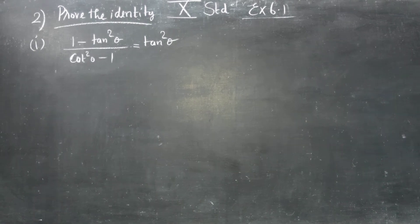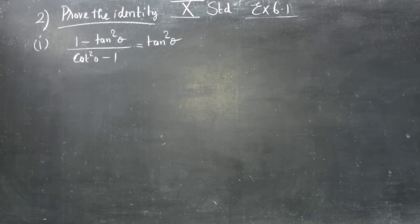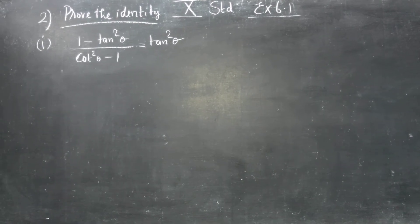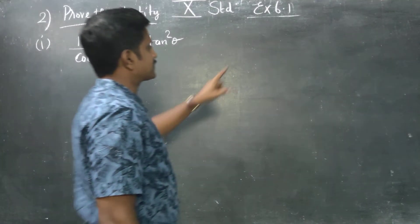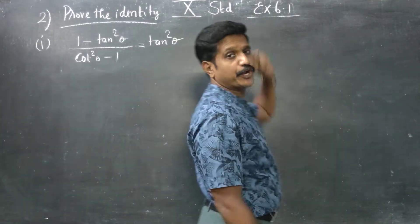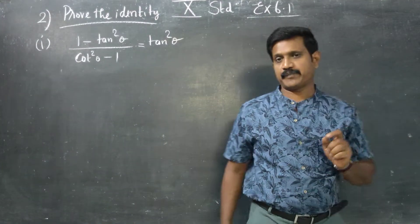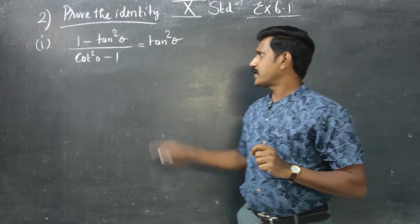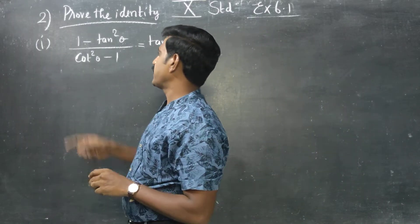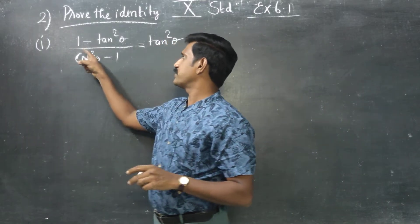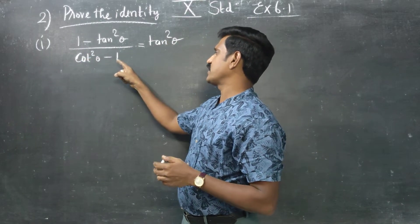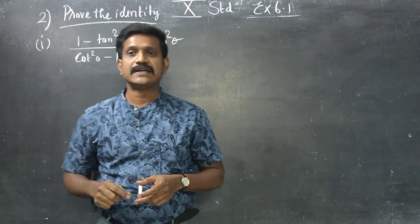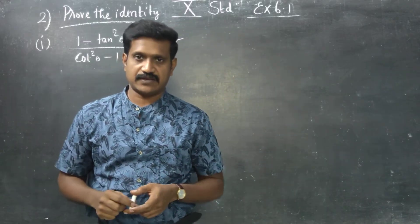Hello 10th standard students. Today in trigonometry exercise number 6.1 we are going to prove the identity: 1 minus tan square theta, divided by cot square theta minus 1, is equal to tan square theta.